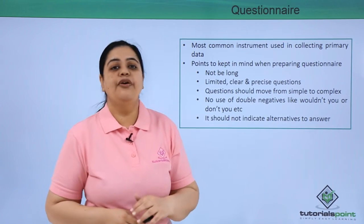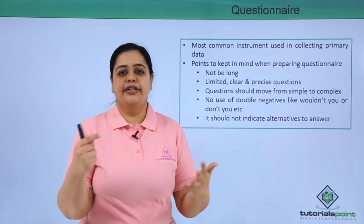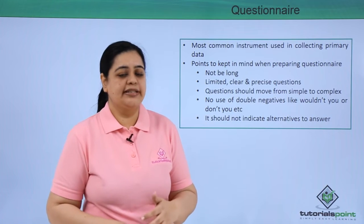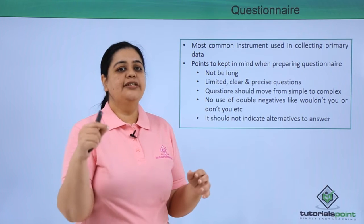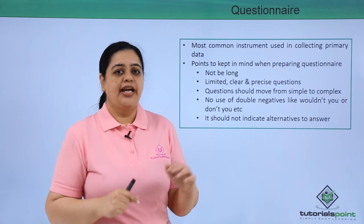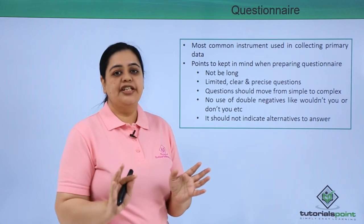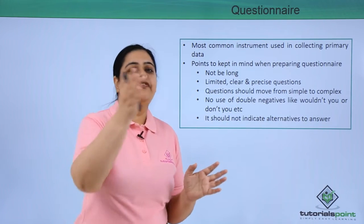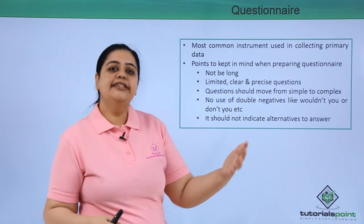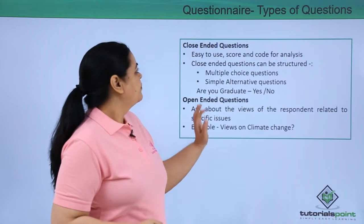The questionnaire should not indicate alternatives to answers in a biased way, because that would result in personal bias. For example, if you ask about climate change but frame the alternatives such that a respondent with a different opinion is still forced to choose from those specific alternatives, that is a problem.